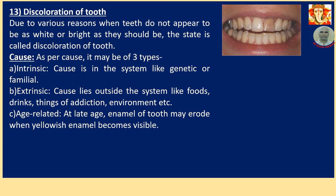Number 12: Discolouration of Teeth. Due to various reasons, when teeth do not appear as white or bright as they should be, the state is called discolouration of teeth. As per cause, it may be of three types: Intrinsic — cause is in the system of the person, like genetic or congenital; Extrinsic — cause lies outside the system, like foods, drinks, addictions, and environment; and Age-related — at late age, enamel of teeth may erode and the yellow dentin underneath becomes visible.